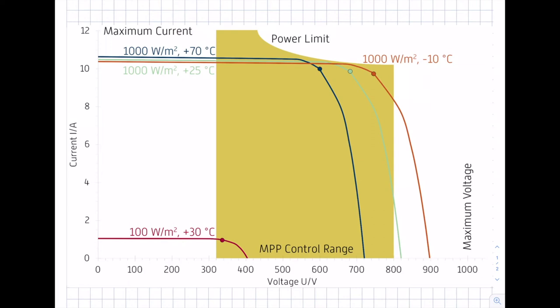There are several parameters which have to be considered to select the perfect inverter for a PV system. What you can see in the figure are IV curves of the PV system. You see the voltage on the x-axis and the current on the y-axis. The different colors represent different IV curves of the system with the modules interconnected in series and in parallel under different conditions.